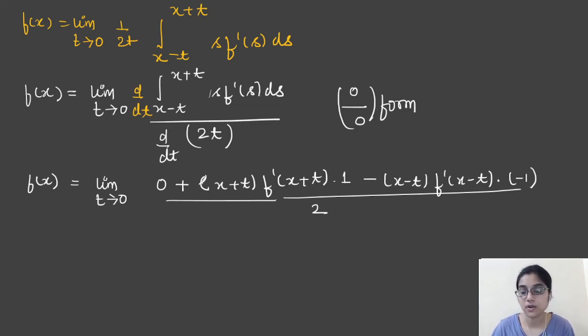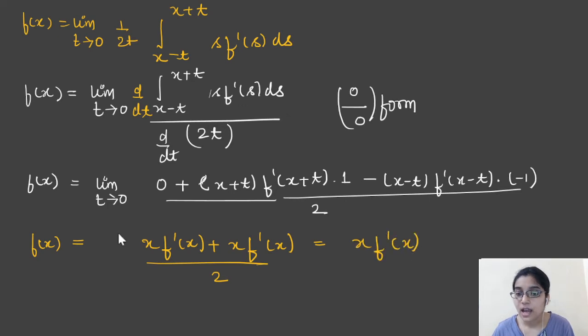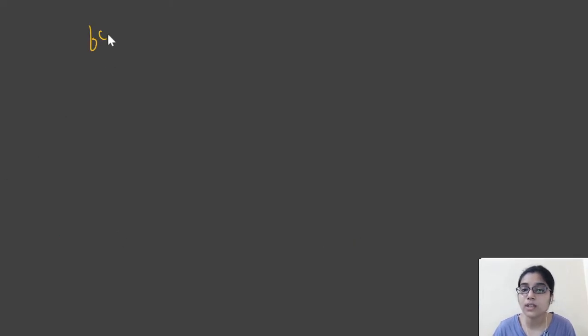I am happy that most of you have answered this question correctly. Now what is going to happen? You will apply the limit t tending to 0, and you can see that the 0 by 0 form has been reduced because in the denominator you are not getting any 0. So it will be x f dash x when you apply the limit tending to 0. This minus and this minus will become plus, so 2x f dash x divided by 2, which is nothing but x f dash x.